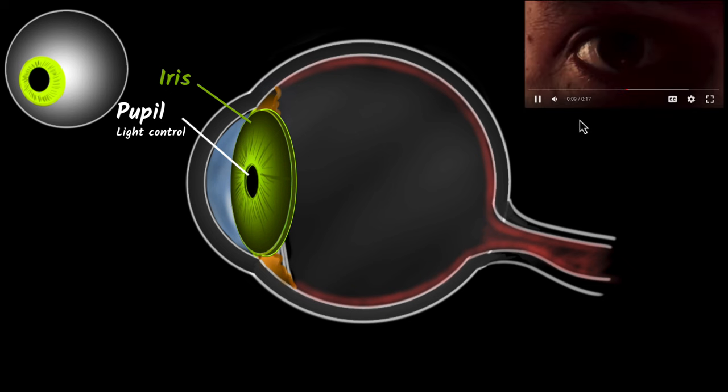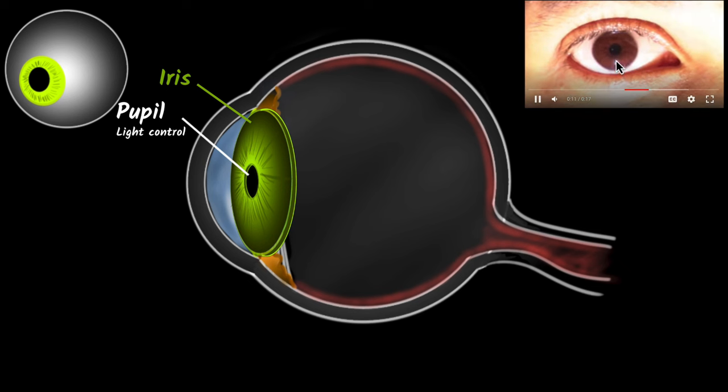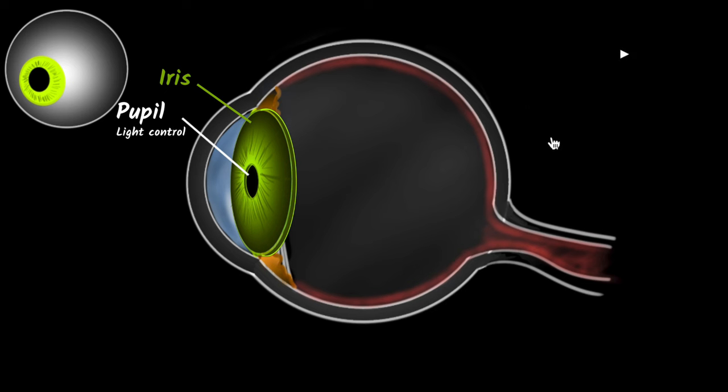And let me show you that. So if you shine light into the eye, look, the pupil became smaller, just like what we saw over here. Okay, so going back, that's the iris and this hole in between is the pupil.